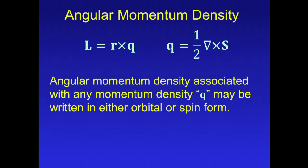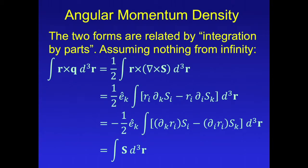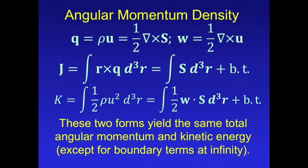Angular momentum density associated with any momentum density Q may be written in either orbital or spin form. The two forms are related by integration by parts. Assuming no contribution from infinity, we can take the integral of the orbital angular momentum and, by integration by parts, convert it to an integral for spin angular momentum. These two forms yield the same total angular momentum and kinetic energy, except for boundary terms at infinity.